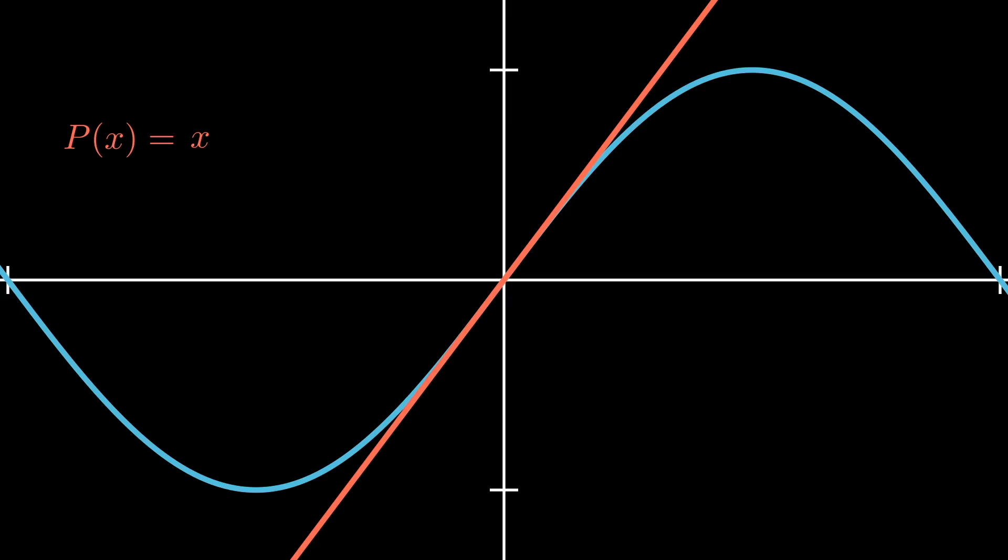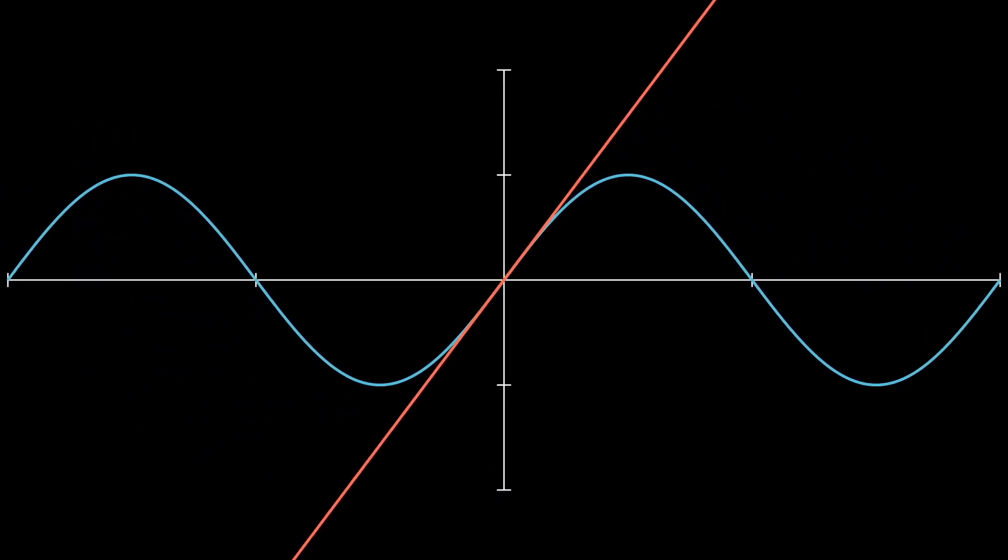While this line is a reasonably good approximation at this scale, when we zoom out, the deviation becomes clear. At this point, we'll start to graph the error with this green function. The deviation between the true function and its approximation really starts to increase off to the side.